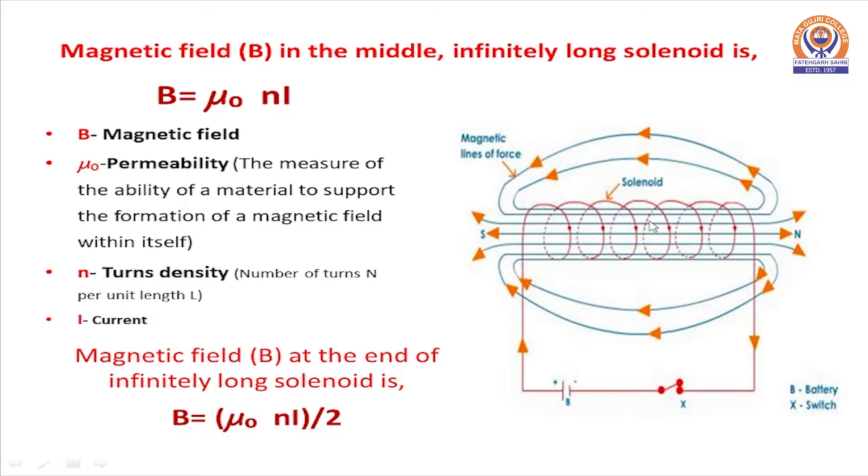Magnetic field produced in the middle of the infinitely long solenoid is B equals mu naught n i. B is the magnetic field produced due to the current passing through the wire. Mu naught is the permeability and n is the number of turns per unit length. i is the current passing through this battery.